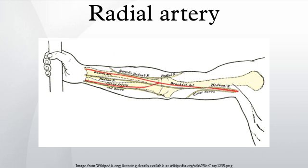It runs distally on the anterior part of the forearm, where it serves as a landmark for the division between the anterior and posterior compartments of the forearm, with the posterior compartment beginning just lateral to the artery.